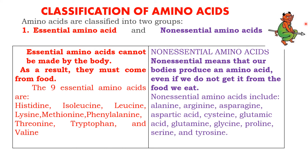Moving to the classification of amino acids. Basically, amino acids are classified into two: essential amino acids and non-essential amino acids. Some amino acids are synthesized by the body, while some must be supplied to the body through diet. Depending upon this, they are classified into these two groups.